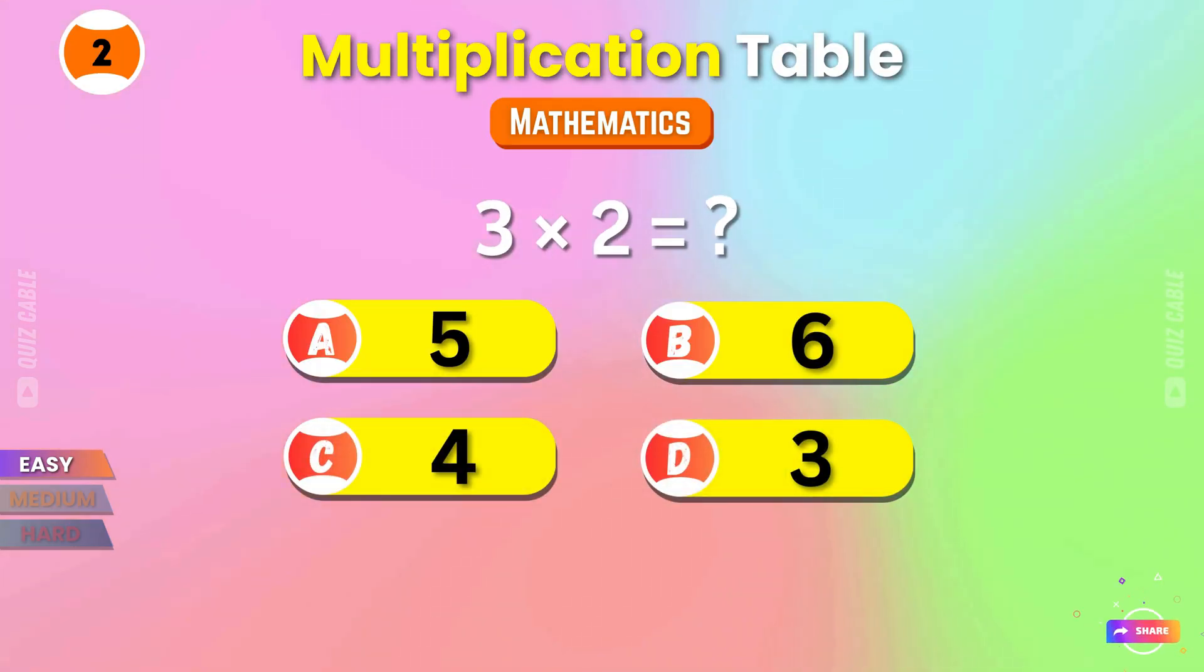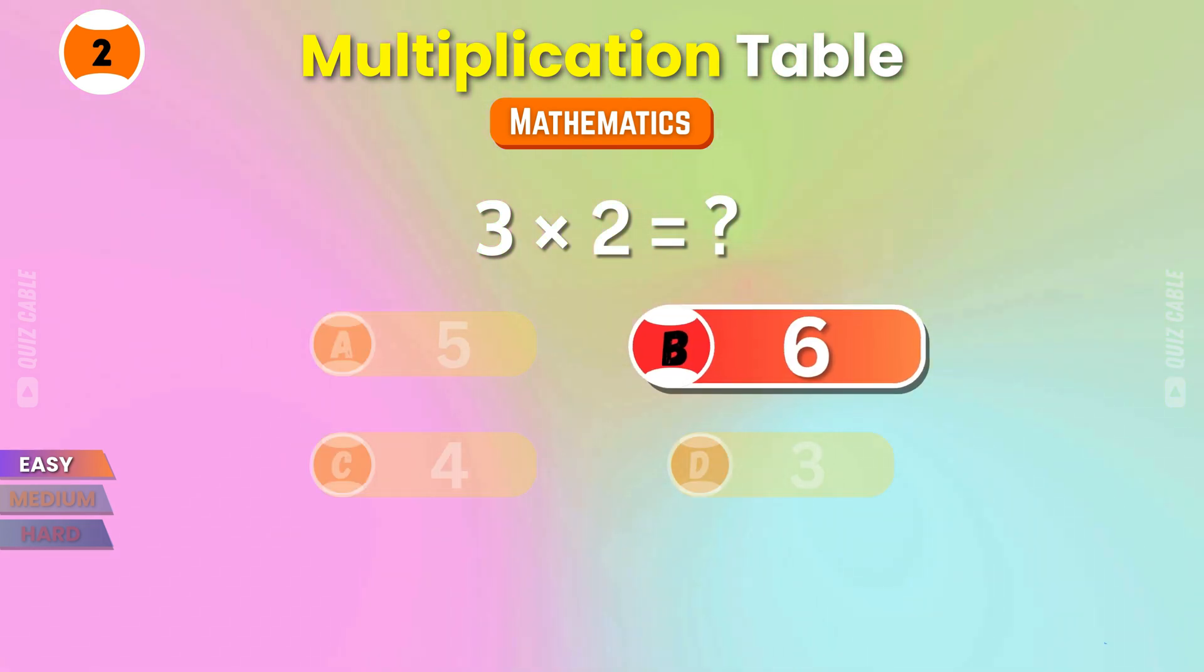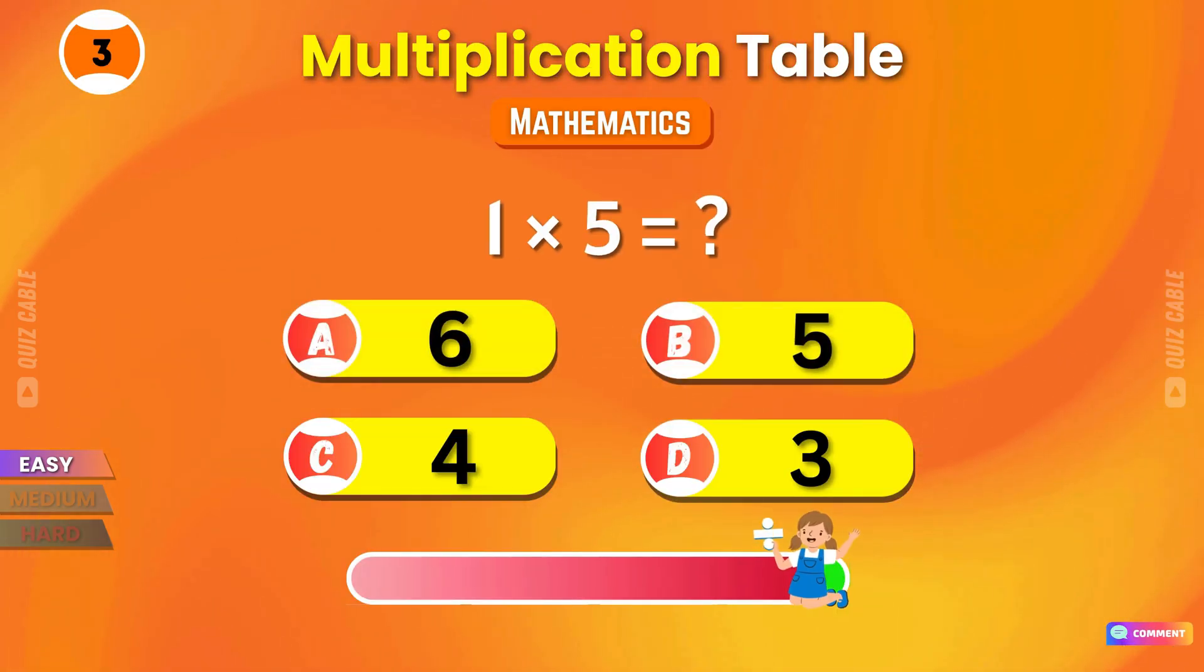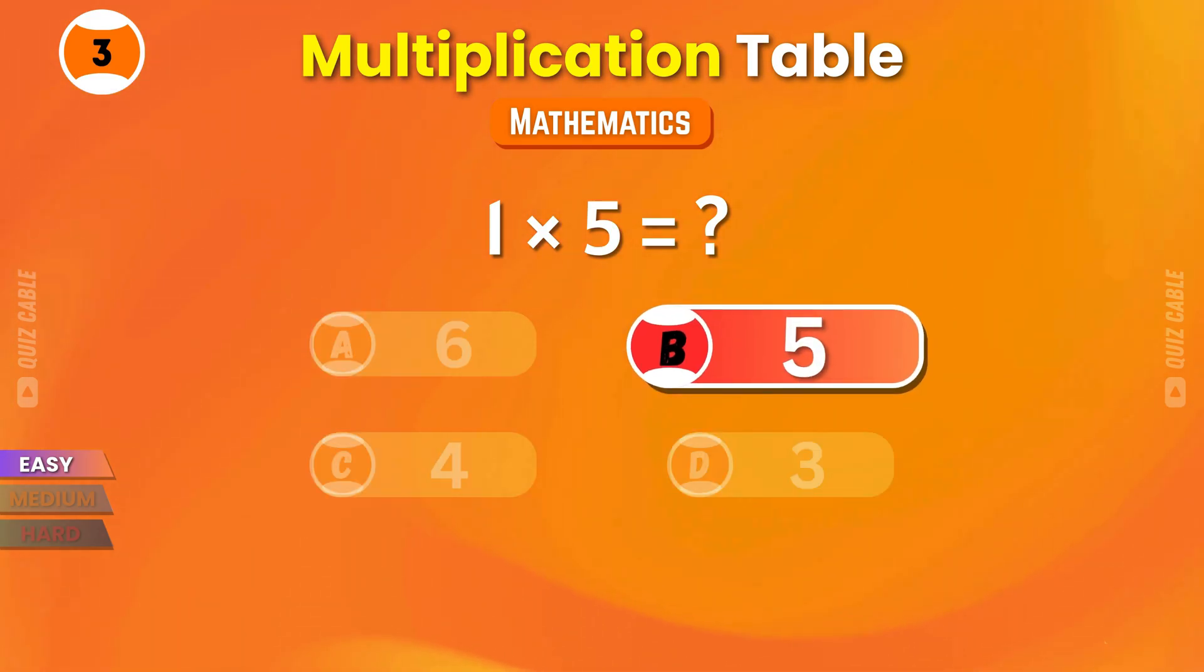3 times 2? That's right, 6. You're doing awesome! 1 times 5? 5! Nicely done.